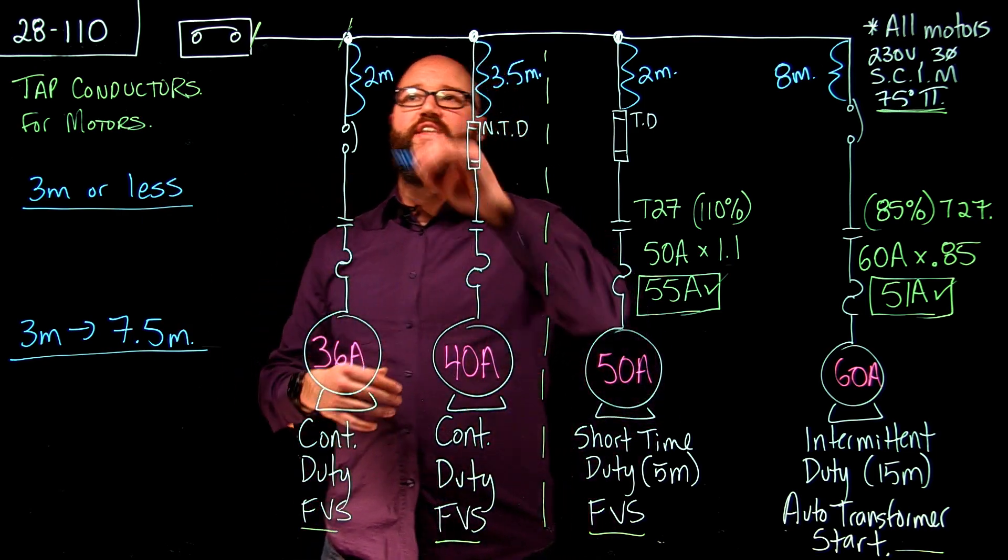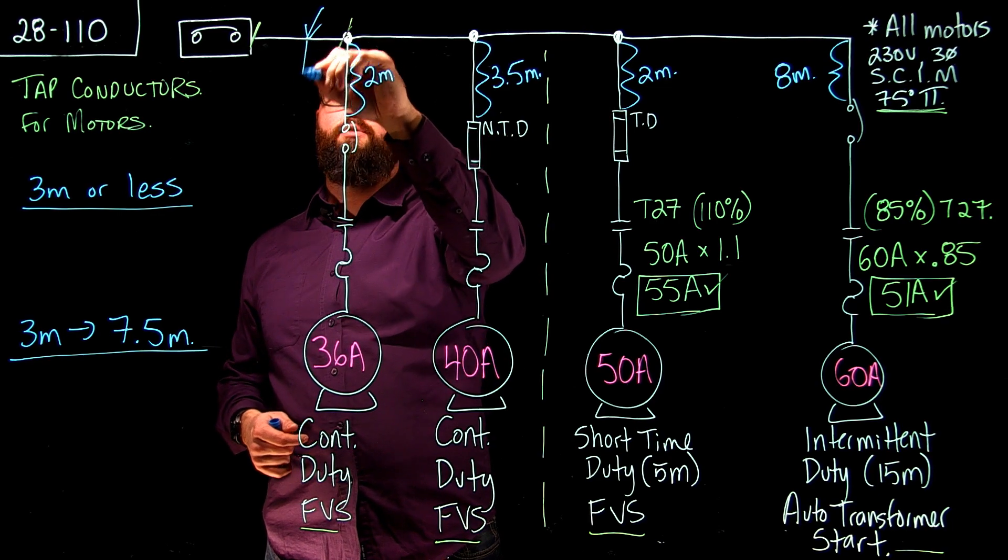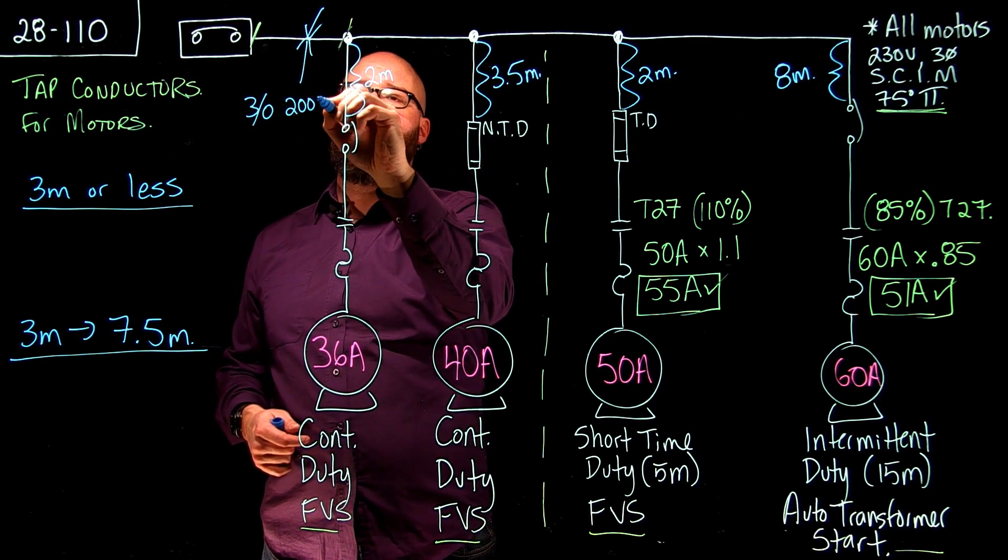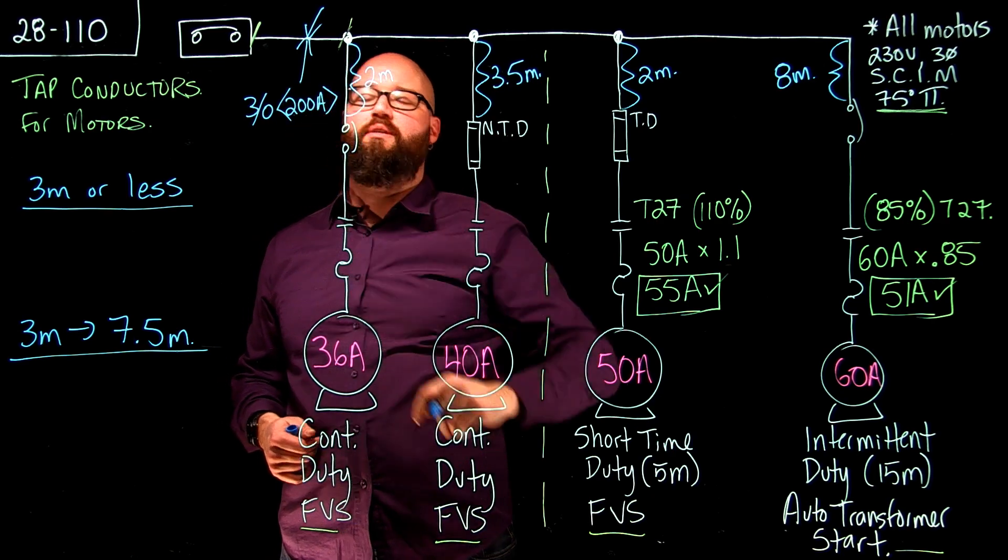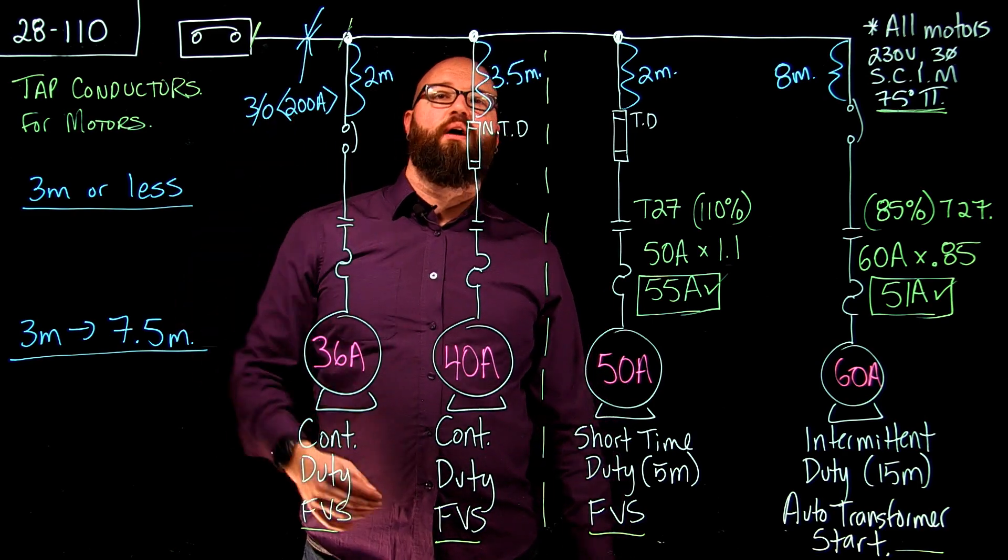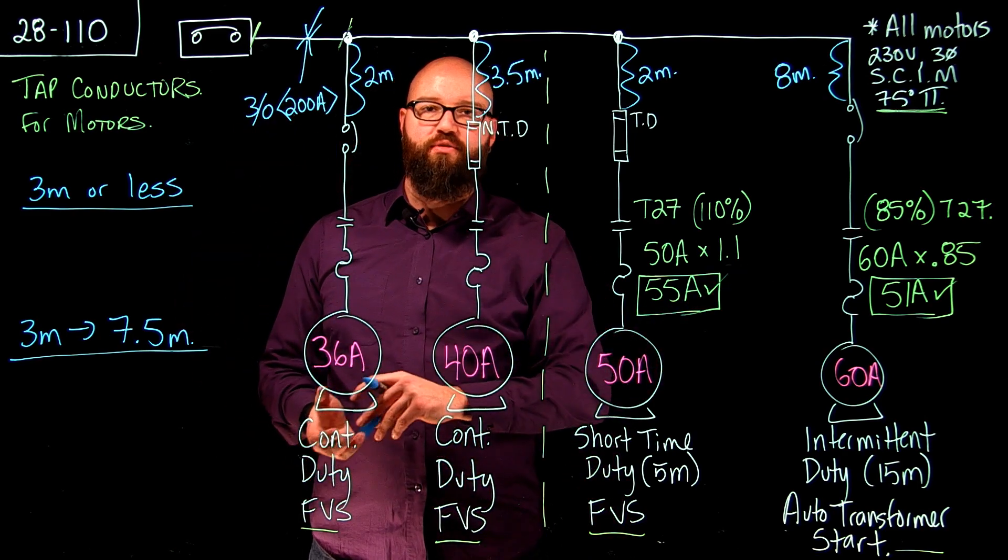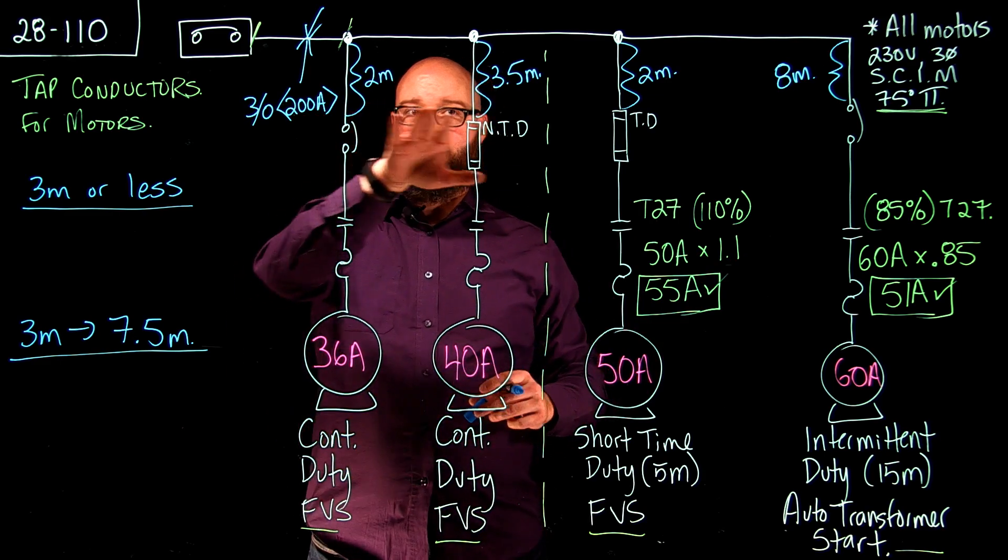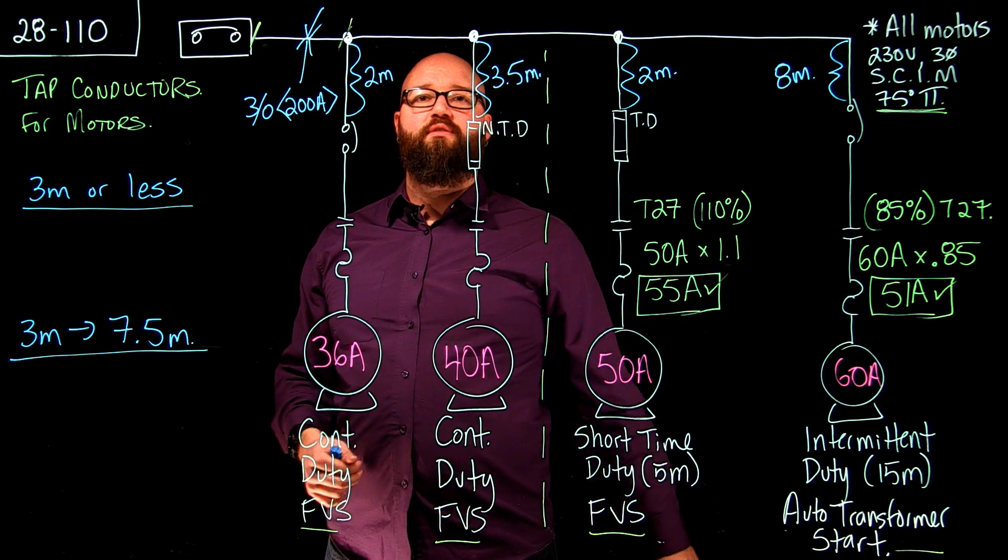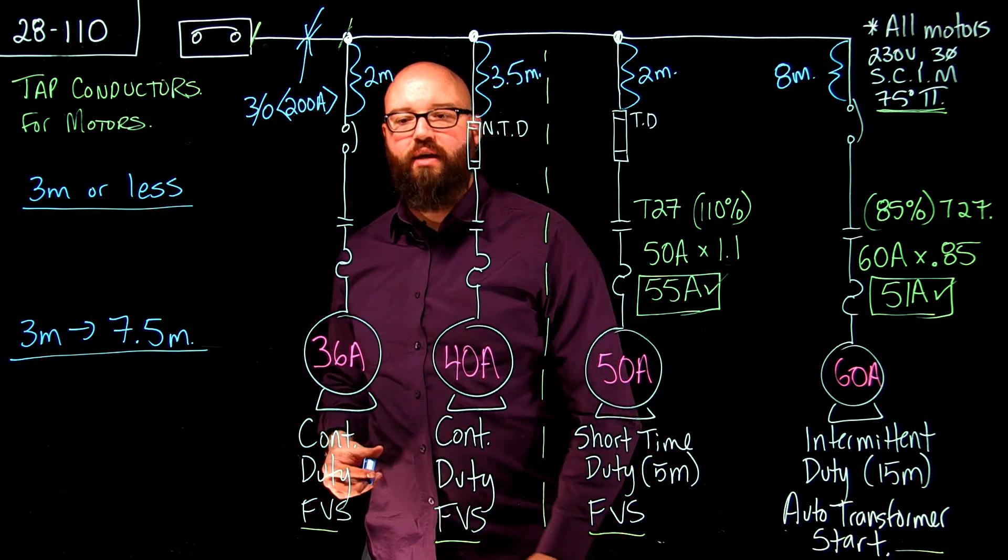In the previous video we determined that this main feeder was a 3-0 which had an ampacity of 200 amps. And that's a descriptive video on how to walk through the steps to calculate that main feeder for this entire bank. But it's important to know when we do this next step. Well, not this next step but when we move over to this one here.